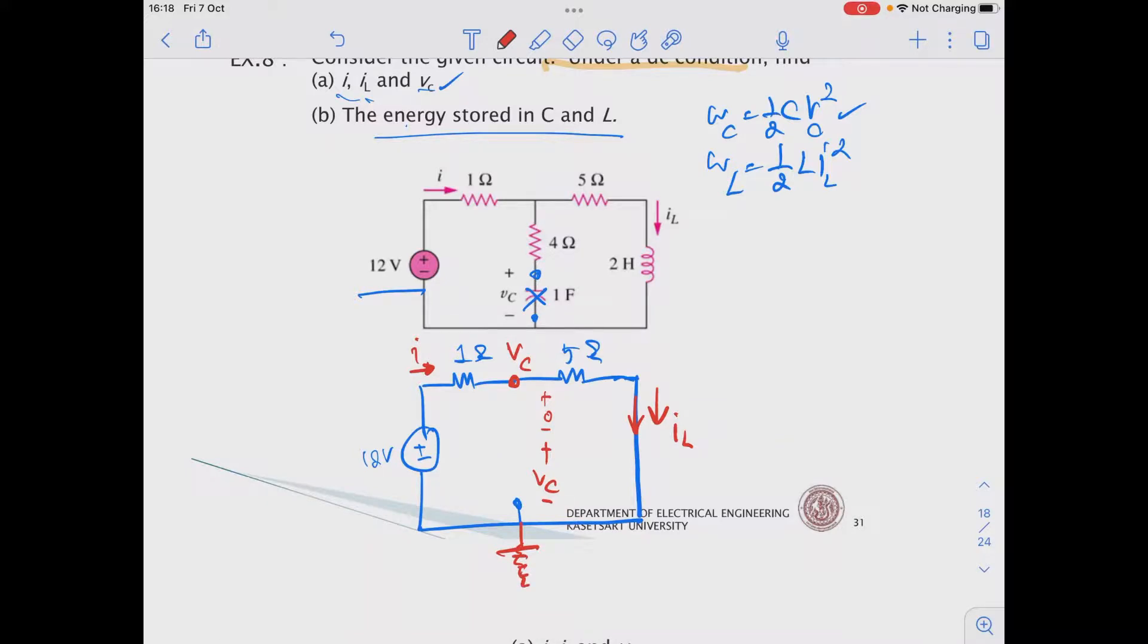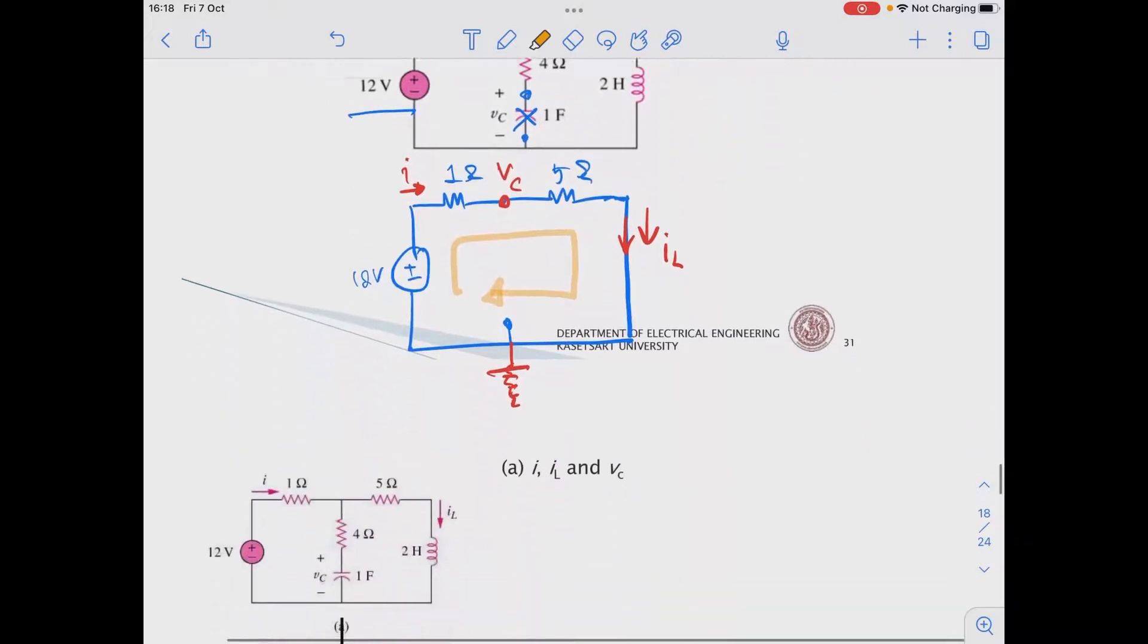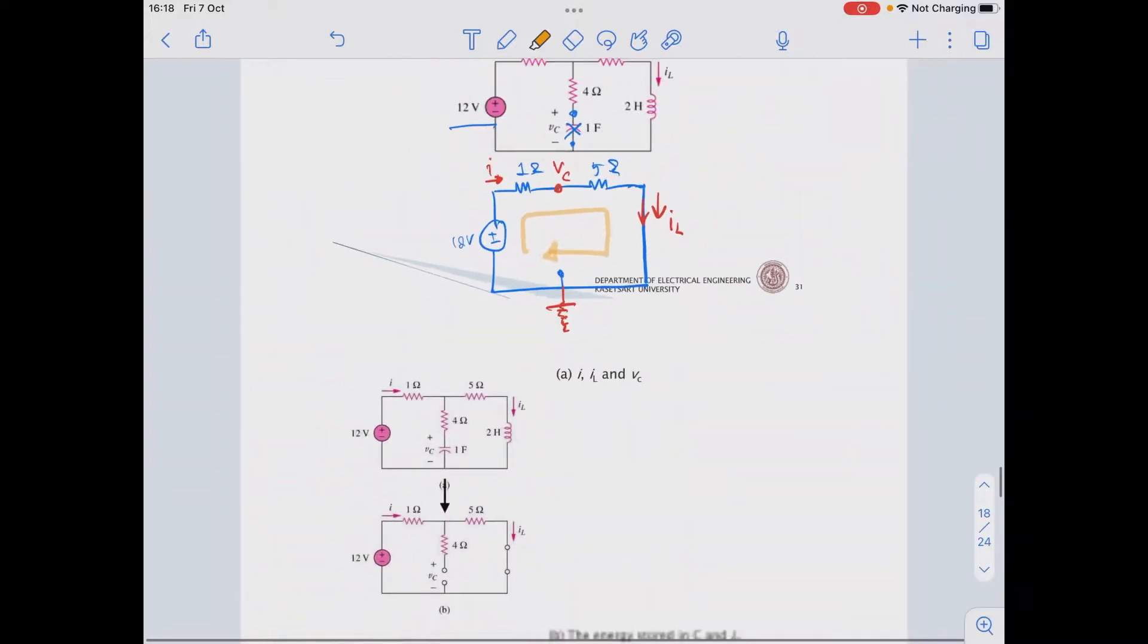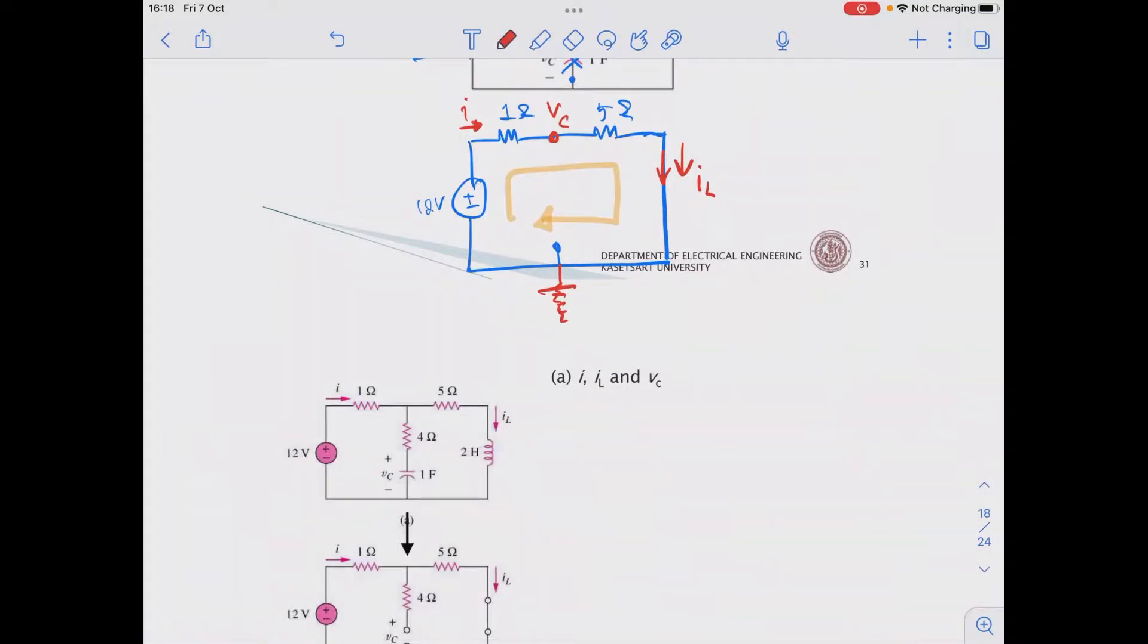Let's find current now based on the analysis, the circuit that we use to analyze it. Now we have a single loop circuit. So current I can be found from I equal to V divided by R.